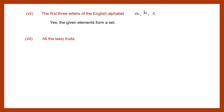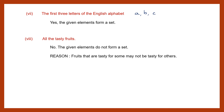Question 8: all the tasty fruits. Now this is not very well defined — we do not know what is meant here by tasty fruits. It might be tasty for some. So no, the given elements do not form a set. The reason is fruits that are tasty for some may not be tasty for others, so the elements are not well defined.